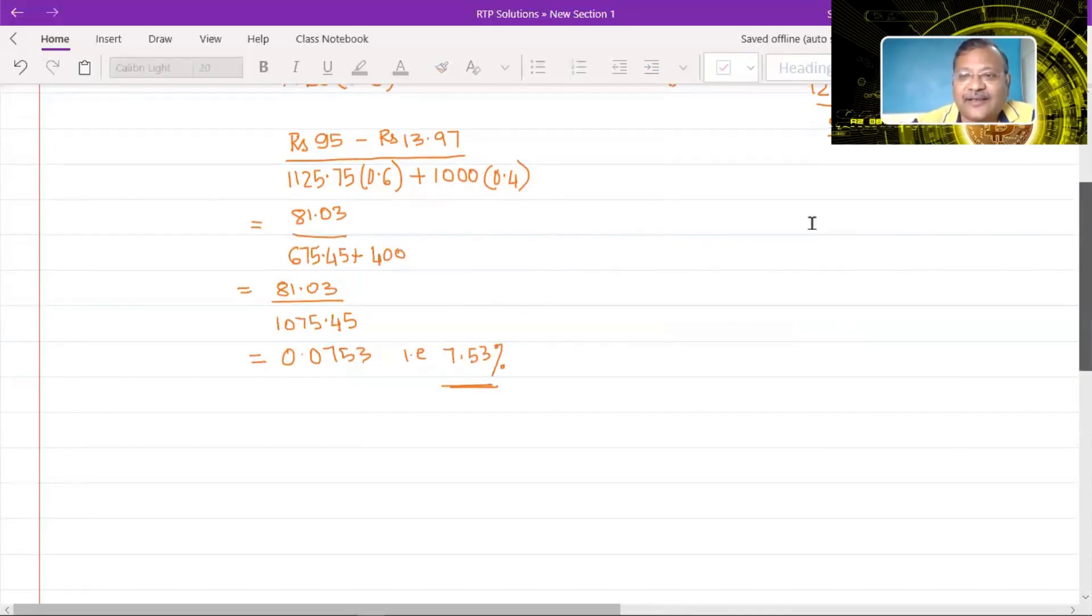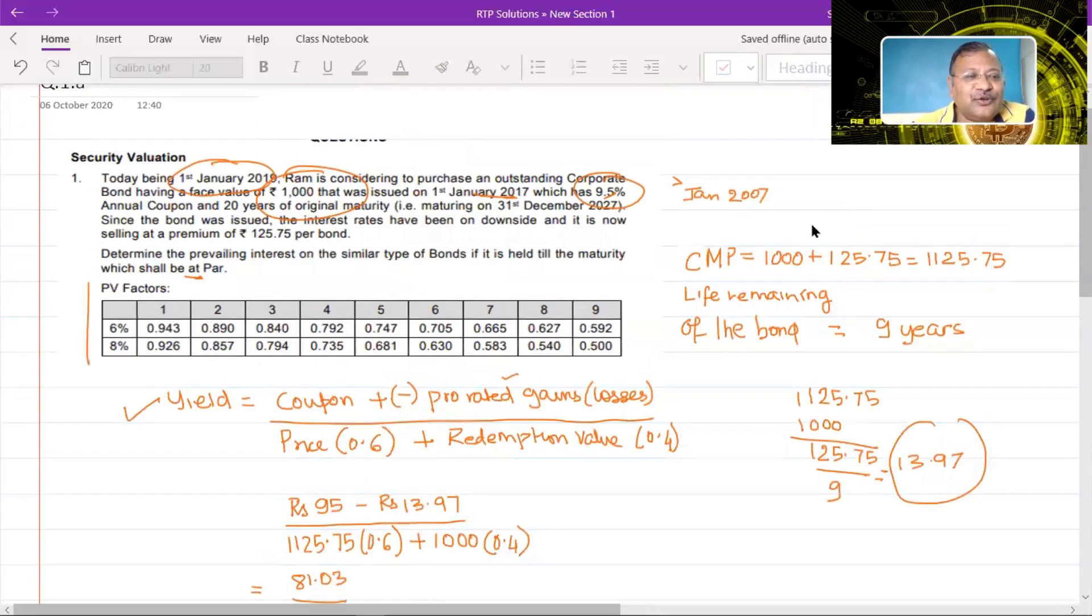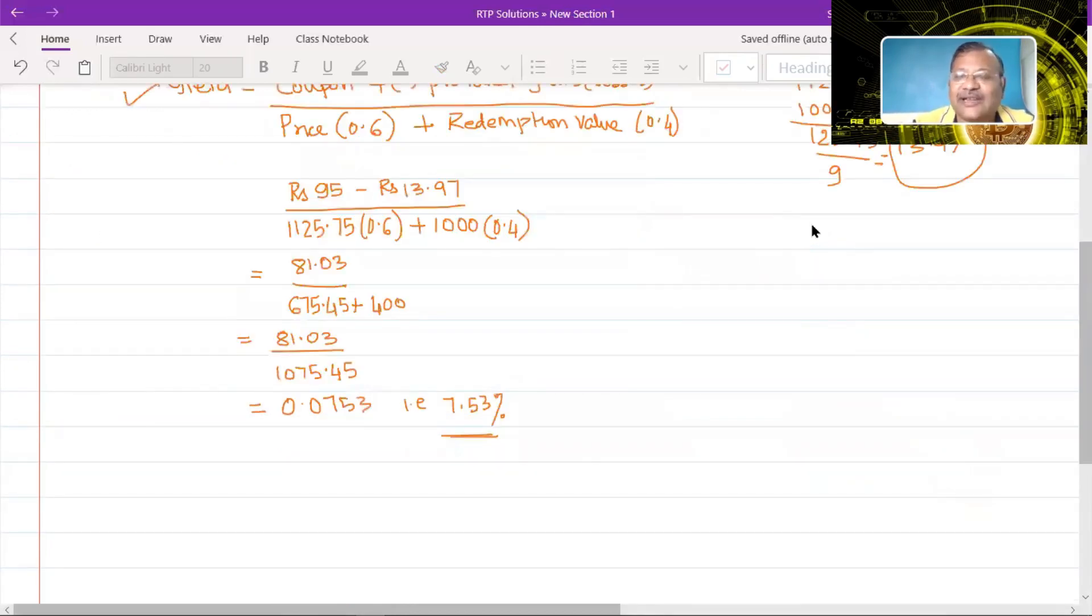Now students, if you notice something, we have not used the PV factors which they have provided. What I have given you is a much simpler way of solving it because otherwise, what you would have to do is you would first need to calculate using a 6% yield and then you will have to calculate using an 8% yield and then you will have to interpolate to determine the yield. That is going to be quite a cumbersome and lengthy process. The method that I have told you is much easier and it involves fewer calculations and it gives you a more accurate answer than what you would receive by interpolation.